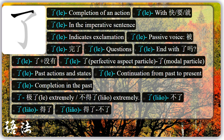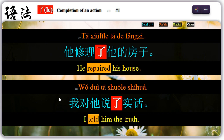17 Chinese grammar points about the use of 了. One: placed after a verb, the particle 了 indicates the action has been completed. For example, 她修理了她的房子 — 修理了, repaired. 我对她说了实话 — 说了, told.